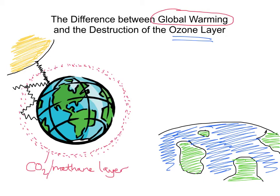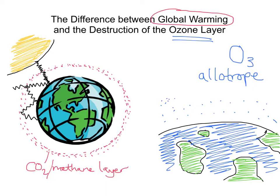Now what you have is something called O3. O3 is an allotrope of oxygen — an allotrope being a different form of an element. This allotrope of oxygen is called O3 or ozone. We have this ozone in the Earth's atmosphere, and I'll represent it as little blue dots. We have a concentrated layer of ozone, and it's that concentrated layer that is referred to as the ozone layer — a concentrated region of this O3 allotrope of oxygen.